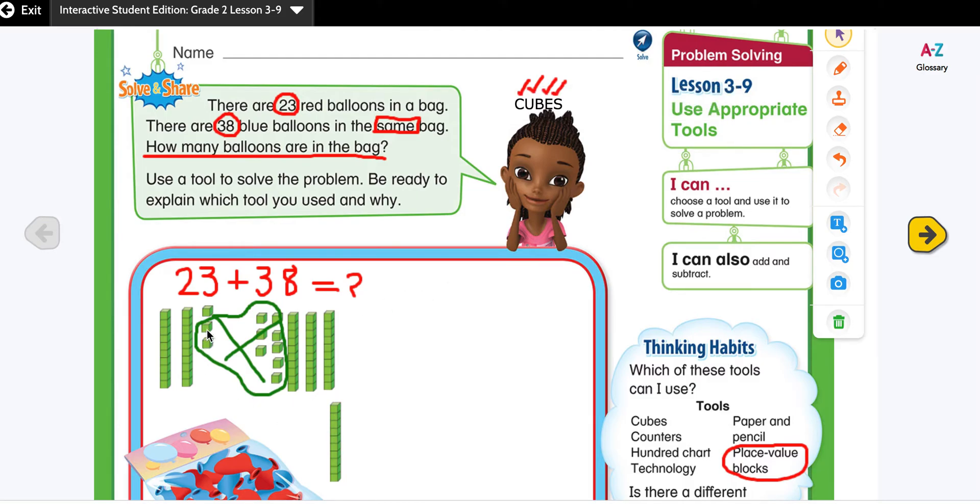Now let me look. How many ones do I have left? 1, 2, 3, 4, 5, 6. I have 6 tens left. So what's my sum? It's 61.